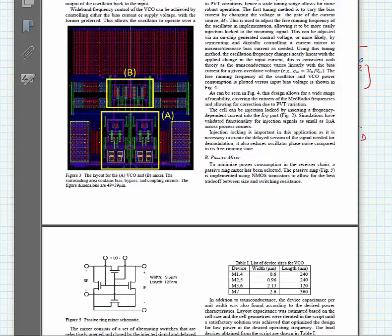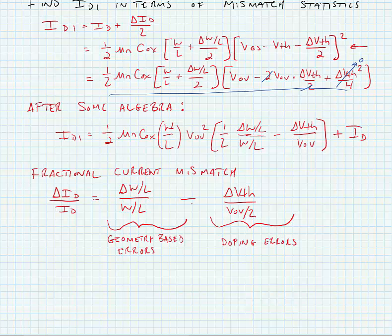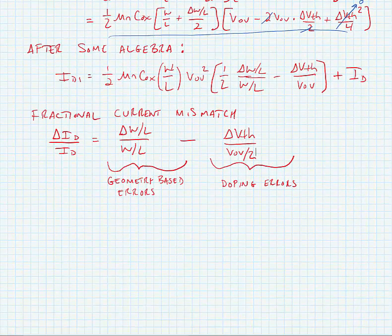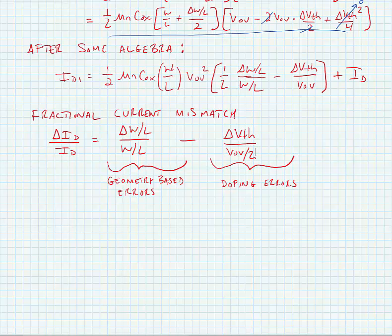We have a minus sign here, but this minus sign doesn't really help us because delta VTH can be plus or minus, right? And the same with W over L, it can be plus or minus. So the error statistically can be centered basically around the mean. What we find here is that we have geometry-based errors and doping-based errors.